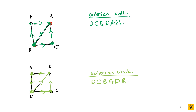The only thing different when using Fleury's algorithm to find an Eulerian walk is that you select one of your odd-degree vertices as your starting point. You should end up at the other odd-degree vertex. Since we chose D, we end at B. If we had selected B as our starting point, we would end at D.